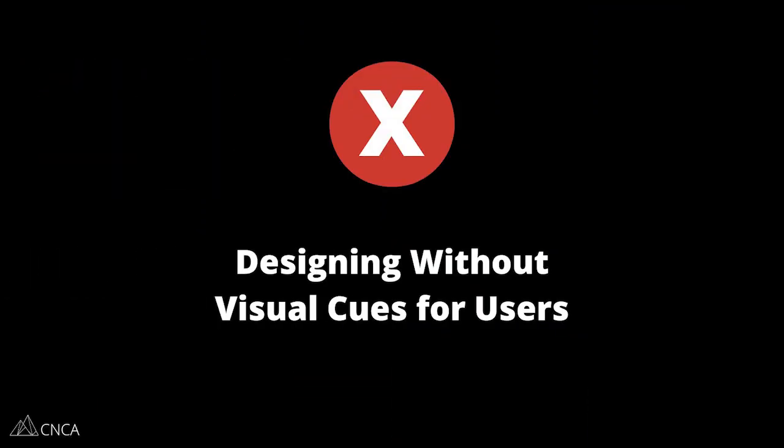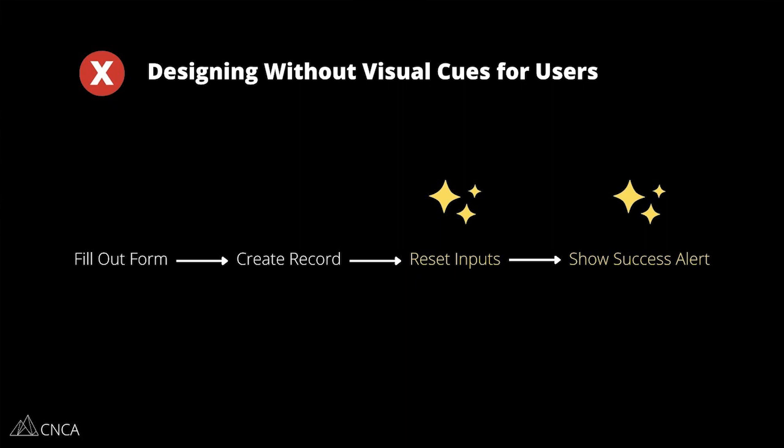Another common mistake we see is designing your logic without any visual cues for your users. It's very likely that you're creating something interactive — your users are going to make selections, click buttons, fill out forms, and create data in the database. If you're not giving them any kind of visual feedback that things are happening in the application, they're going to think it's broken. So for example, let's say your users fill out a form, enter their name and email and other information, and clicking a button creates a new record in the database.